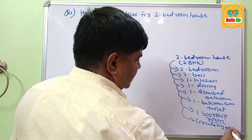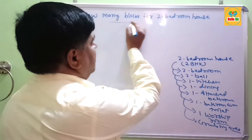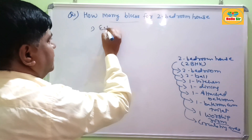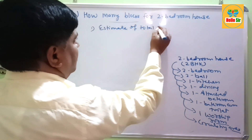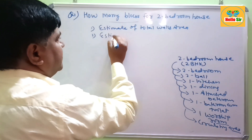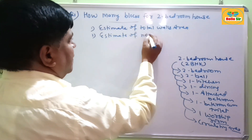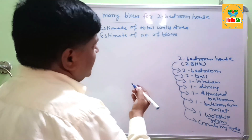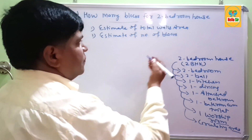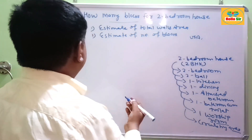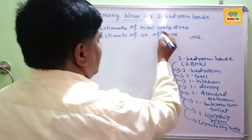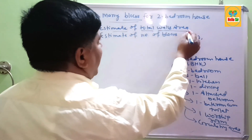To estimate the number of concrete blocks required, you first need to estimate the total wall area of your two-bedroom house, and secondly estimate the number of concrete blocks. Note that concrete blocks — also called cinder blocks — are today replacing the use of red brick in many countries like the USA, Canada, African countries, India, and European countries.